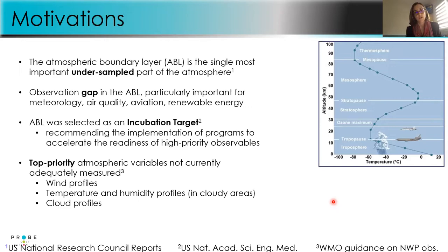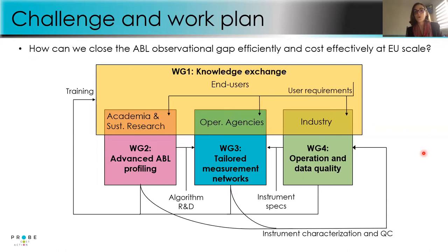Among the top priority atmospheric variables that we should have more of in future networks, we have identified at least three: wind profiles, temperature and humidity profiles specifically in cloud areas, and cloud profiles. The aim of the PROBE COST Action is to close the ABL observation gaps cost-effectively at a European scale, with homogenization of networks and coordination of efforts.